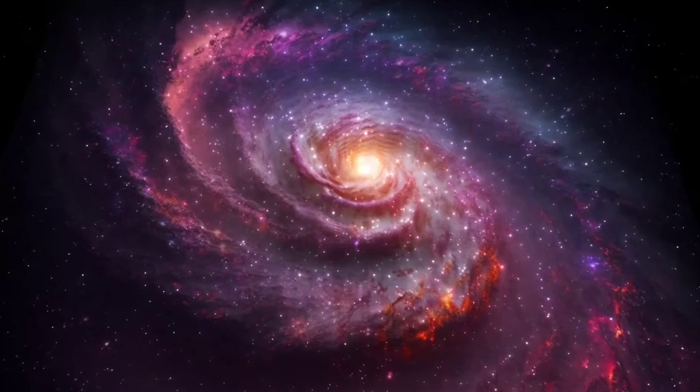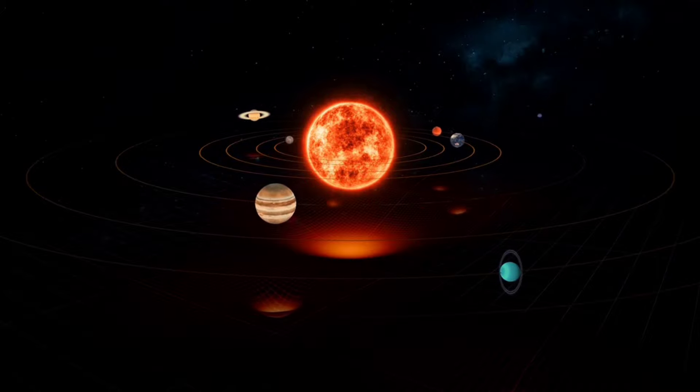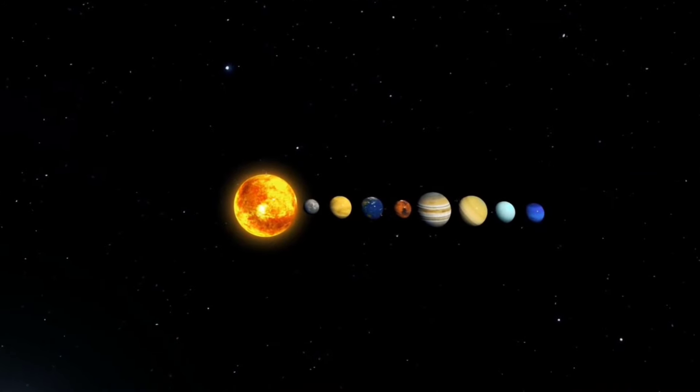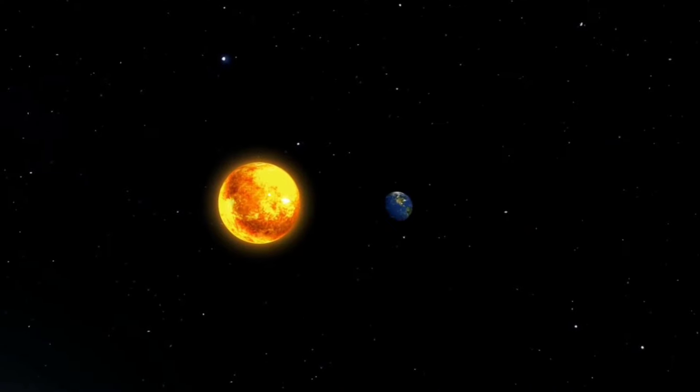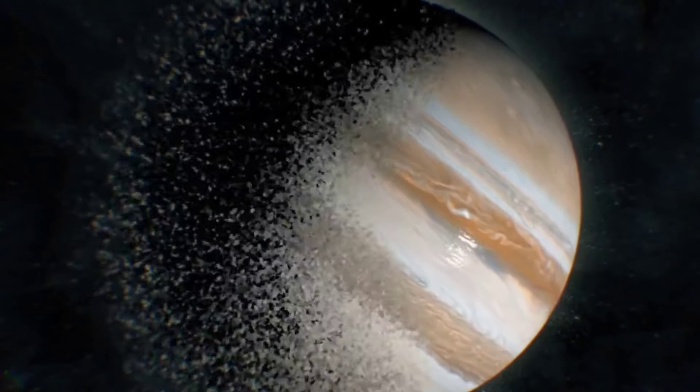To explore the broader implications on our solar system's dynamics, you can refer to our episode, What if Earth was the only planet in our solar system? However, if only Jupiter were to vanish, it could be viewed as potentially advantageous.